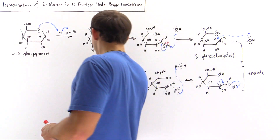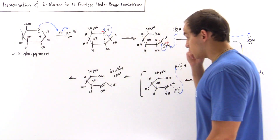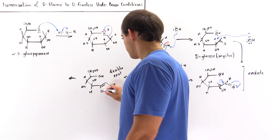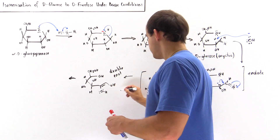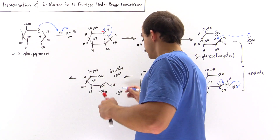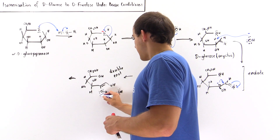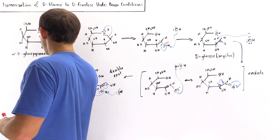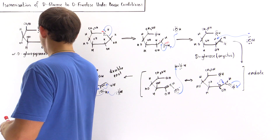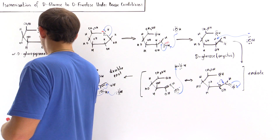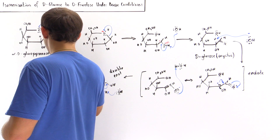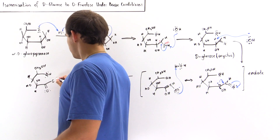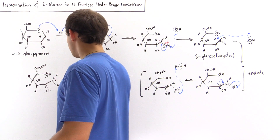In the next step, since we're under basic conditions, the base takes off this H atom from the double enol, forming a pi bond and placing these two electrons onto this carbon — forming a carboanion intermediate again. We have the oxygen and H, the primary alcohol group, double bond to oxygen, OH pointing up, H pointing down, OH pointing down, H pointing up, and this carbon bearing the two electrons, H, and OH.